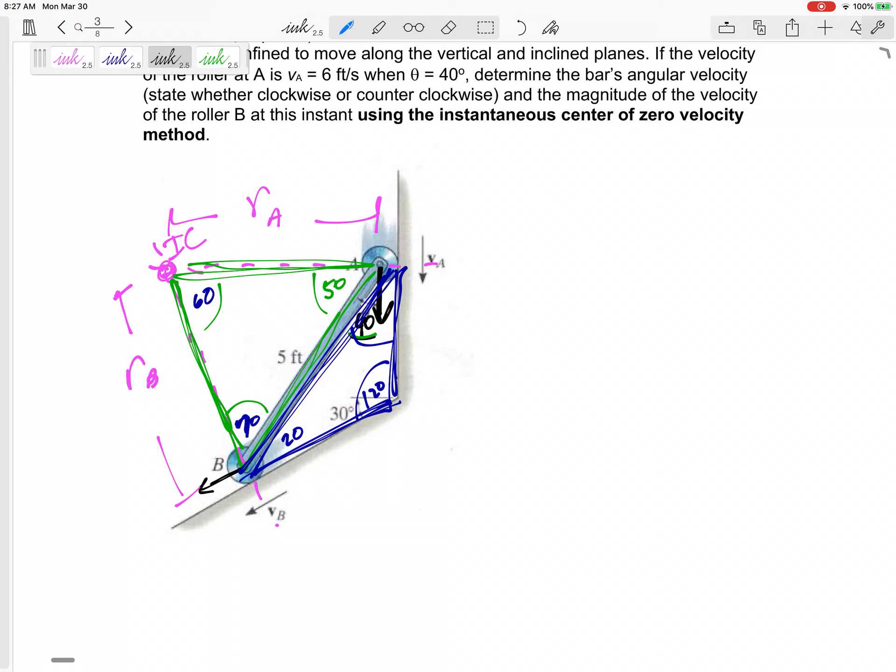So, how about this one? Sine of 50 over RB. Which is the one that I know? This is the one that I know. Sine of 60 over 5. Sine of 50 over RB equals sine of... Alright, so I can get RB 4.42 feet. I could also do sine of 60 over 5 is equal to sine of 70 over RA. And I would get RA 5.43.